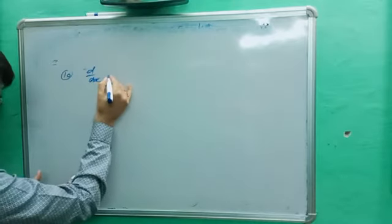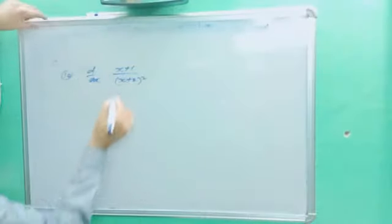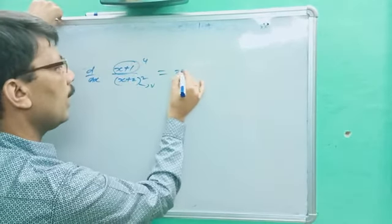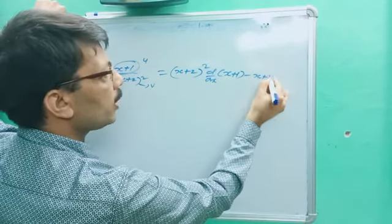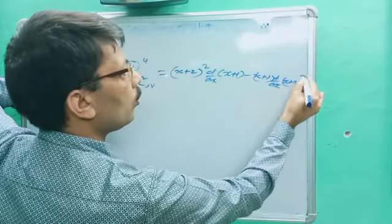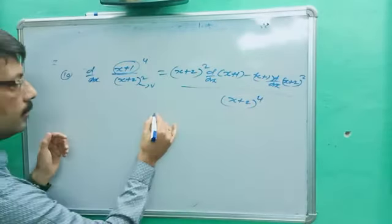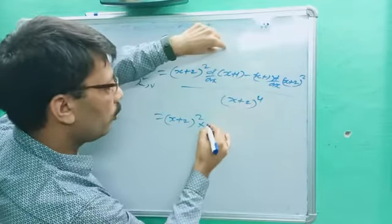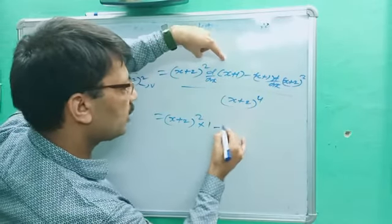Tenth question: d/dx of (x+1) / (x+2)². Using the quotient rule: (x+2)² · d/dx(x+1) minus (x+1) · d/dx[(x+2)²], divided by (x+2)⁴. Now d/dx(x+1) = 1, since d/dx of x is 1 and d/dx of 1 is 0.